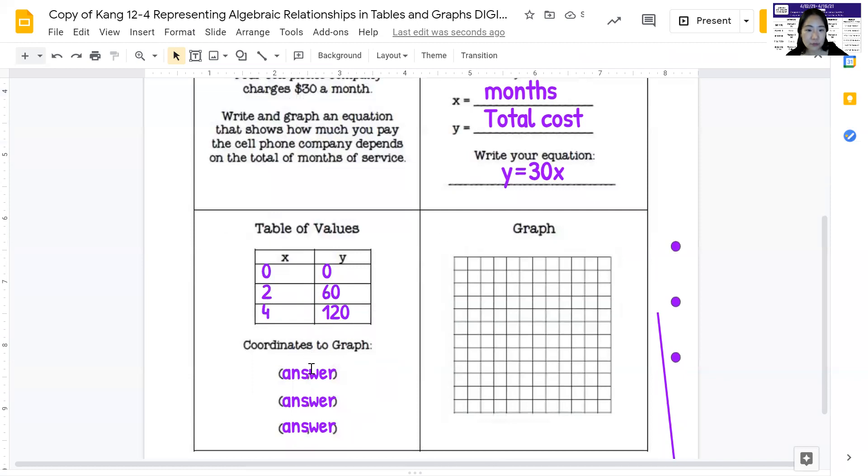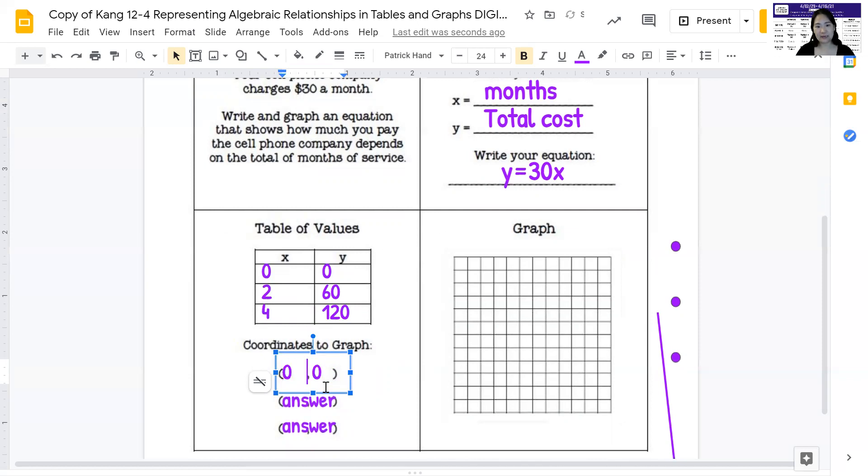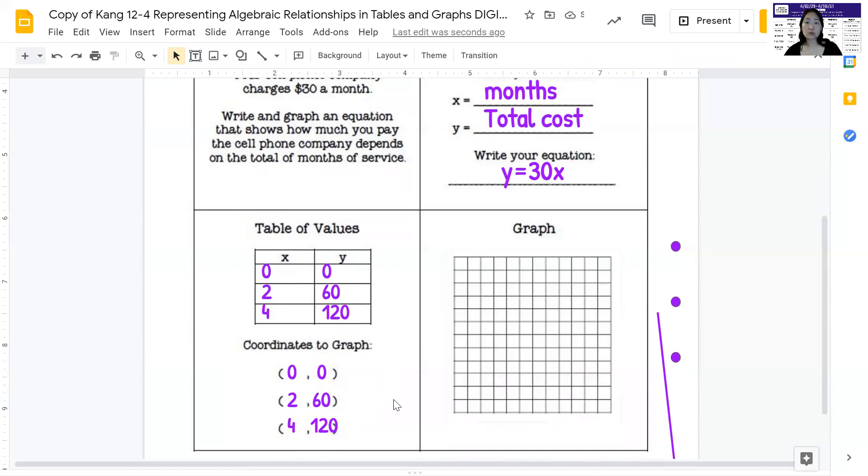All right. Now, using these values, now I'm going to write the order pair. So I'm going to click, double click, and I'm first going to write the first order pair, which is zero, zero. I'll do a little space here. The next one is 2, 60. So 2, 60. And the next one is 4, 120. And those are my order pairs. Those are my coordinates to graph.